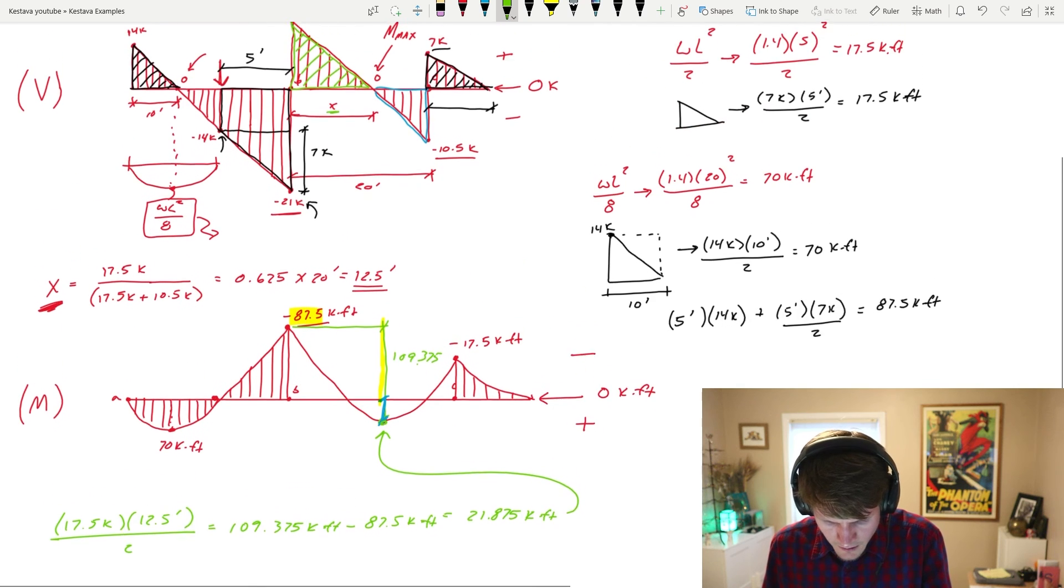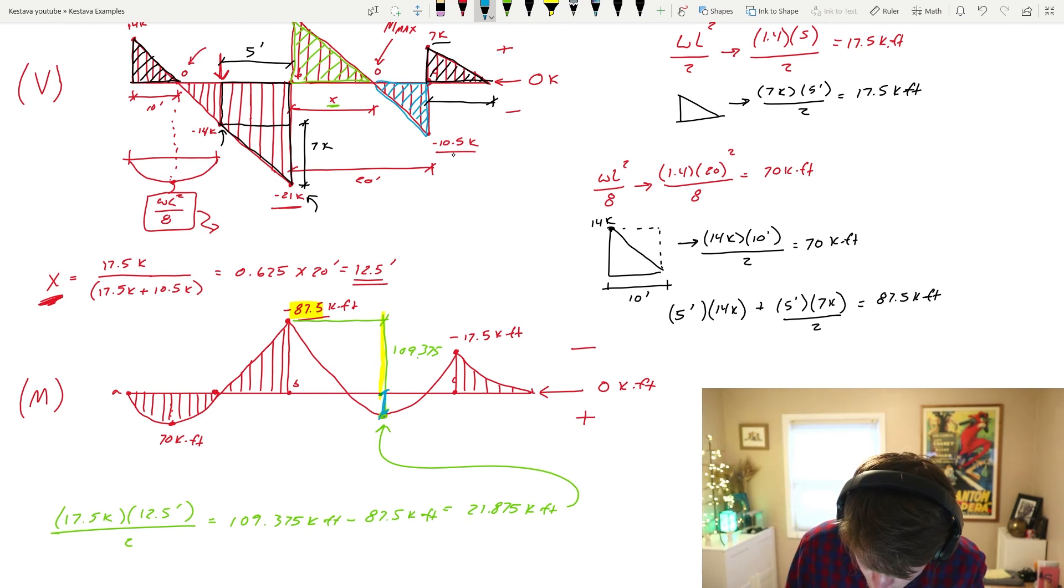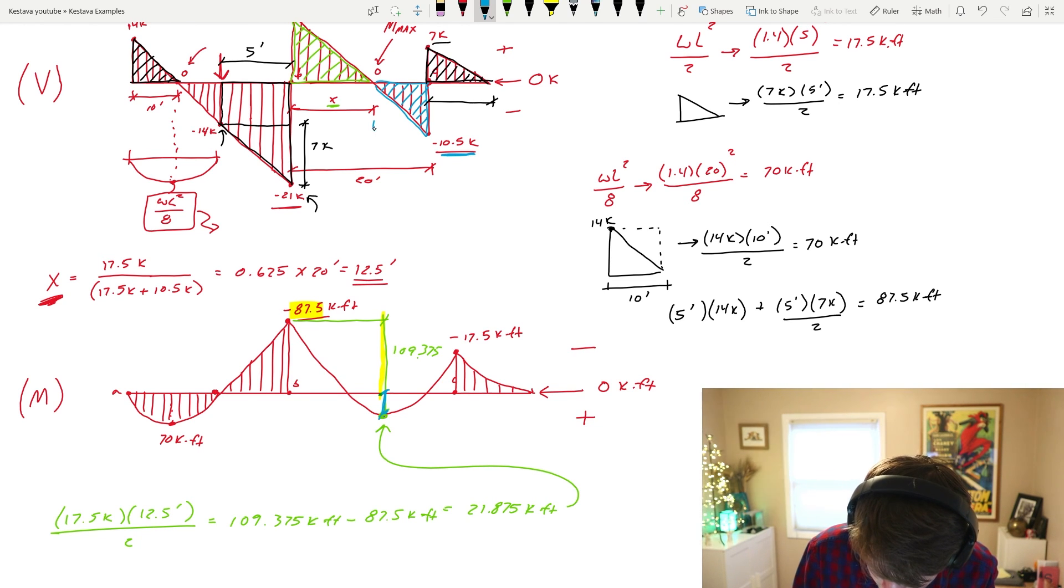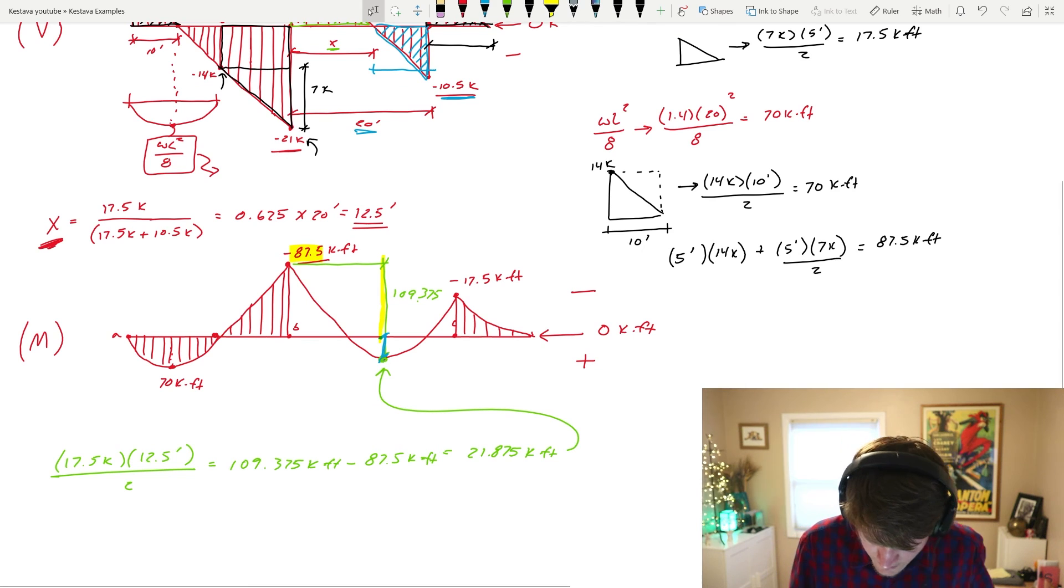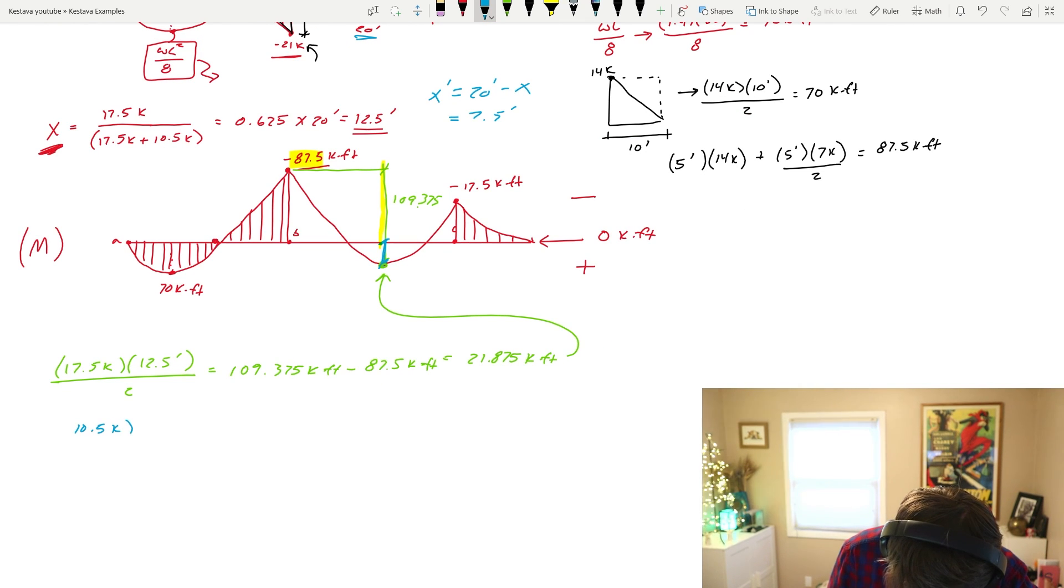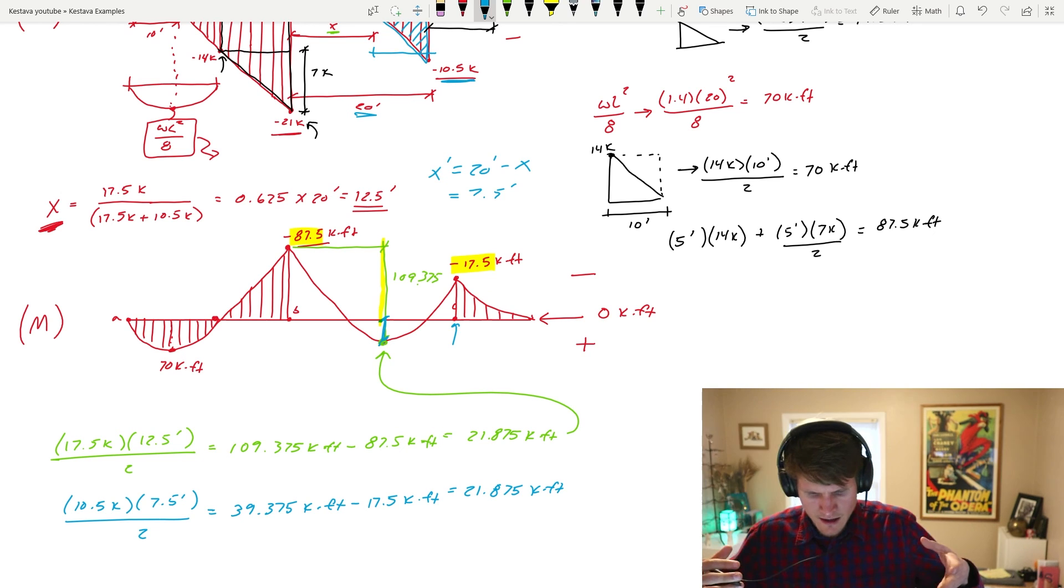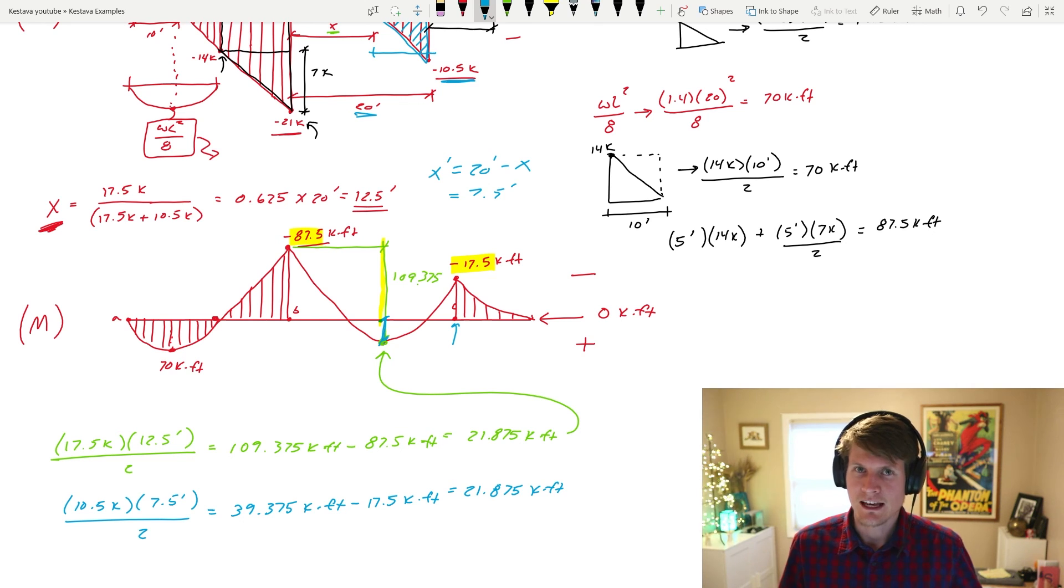What happens if we did it from reaction C? Now we need the area under the curve of the blue triangle. 10.5 is our kips. And then this distance is 20 feet minus X, we'll call it X prime, 7.5 feet. So 10.5 kips, 7.5 feet divided by two gets you the area of the triangle, gets you 39.375 kip feet. But we need to subtract the moment at reaction C, which gets us, lo and behold, 21.875 exactly. They match one another. It means that the calculations you ran, that's kind of my safety to say, okay, I did this correctly. Everything's aligning, whether I take it from this direction or that direction, they work out. So it's a little kind of factor of safety to check yourself.